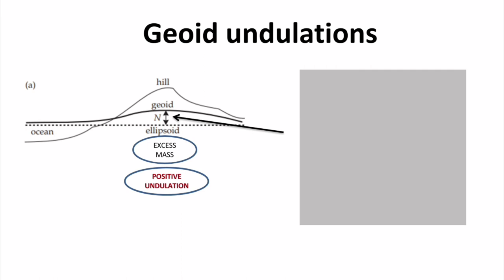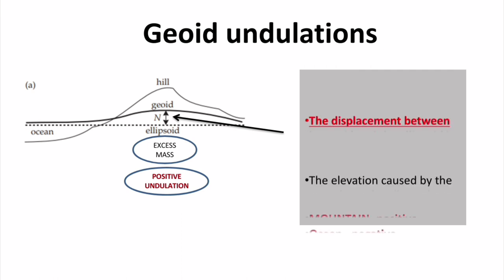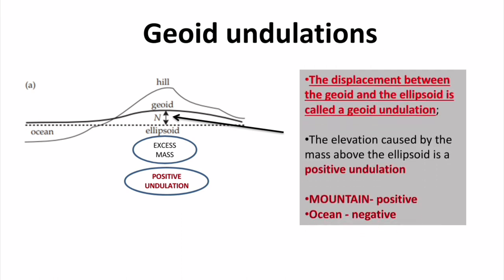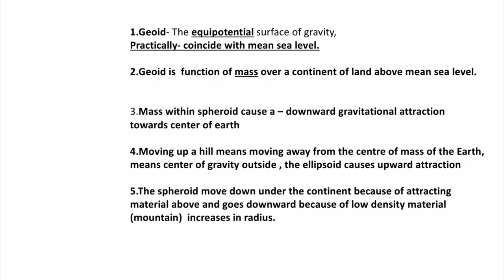In the case of a hill the geoid undulation will be positive due to excess mass, and in the case of ocean it will be negative due to deficiency of mass. The displacement between the geoid and the ellipsoid is called geoid undulation — elevation caused by excess mass is positive undulation and by deficiency of mass is negative undulation.